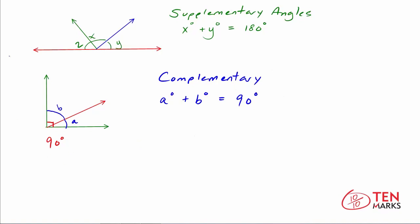Something else I want to draw your attention to is that the angles don't need to be next to one another for them to be supplementary or complementary. And by next to one another, we're really talking about adjacent angles. The term adjacent means that the angle shares a common vertex and a common side. The common vertex is right here between these two angles, and the shared side or common side is this ray that goes above the line. So if you had angle X and Y, they are adjacent to one another because they share this common vertex and a common side. Angles A and B are also adjacent angles because they share the common vertex and the common side.